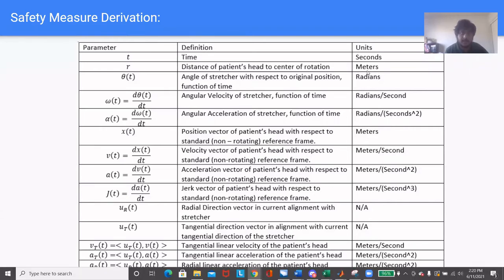Below are the safety measure derivations. On this slide, you can see a table using the constants used for the safety measure derivation. T is the time. R is the distance of the patient's head to the center of rotation. Theta, omega, and alpha are angle, angular velocity, and angular acceleration, respectively. X, V, A, and J are position, velocity, acceleration, and jerk, respectively. U_R and U_T are the radial and tangential unit vectors. V_T, A_T, and A_R are the tangential and radial velocities and accelerations.